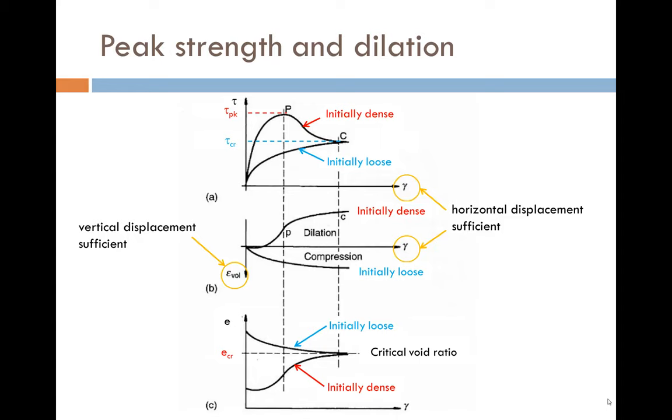The information in the second plot can be represented in an alternative way in the third plot: void ratio against shear strain. Regardless of the initial void ratio, the same void ratio is reached at critical state for any one value of normal stress. It is important to say that all test results shown here will depend upon the normal stress applied in the shear box test.